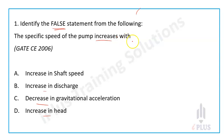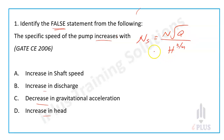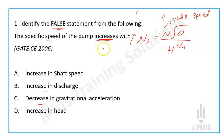The specific speed of the pump from the civil engineering paper is represented by Ns equal to N times root Q divided by H raised to 3 by 4. Here N is shaft speed in RPM. So increase in shaft speed increases specific speed, increase in discharge Q in the numerator increases specific speed, and decrease in gravitational acceleration also increases specific speed.